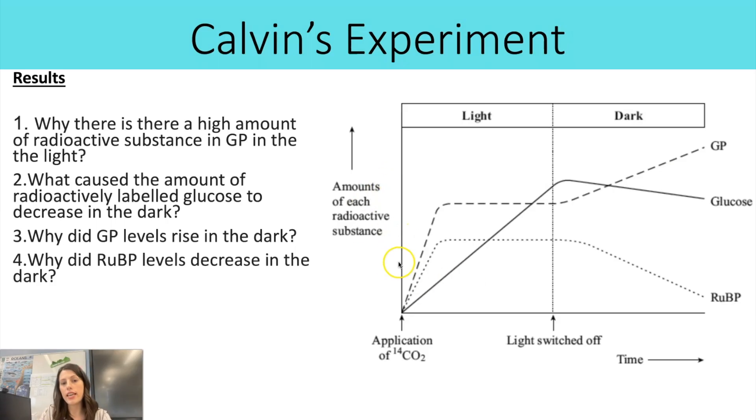So you could be shown data like this, where we've got the amount of each radioactive substance, and we've got when it was all set up in the light, and then turning off the lights, have exactly the same setup, but in the dark. And this is often what they would do, so you get this direct comparison of what happens in the light, what happens in the dark, to show that even though it's called the light-independent reaction, why there is actually a change in effect when the lights are turned off. So in this particular example, we've got information on GP, glucose, and RUBP. Most of the time when I've seen this exam question, they actually only include GP and RUBP, but because this one did have glucose as well, I thought let's put it in and we can explain all three.